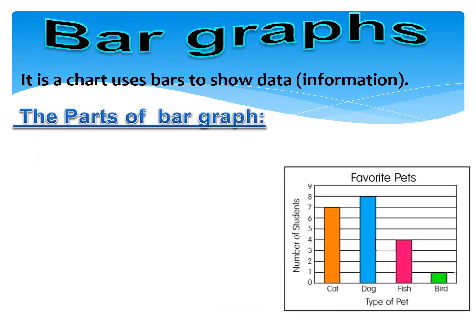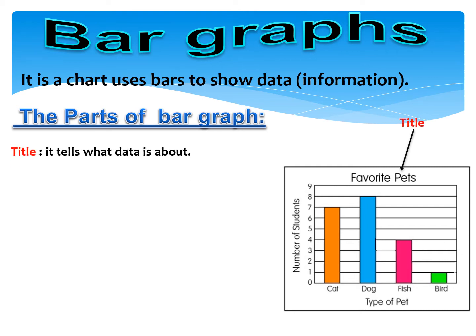The parts of a bar graph. The first part is the title. It tells what the data is about. The title means the name of the bar graph. Like our bar graph, its name is Favorite Pets.